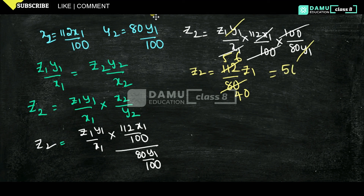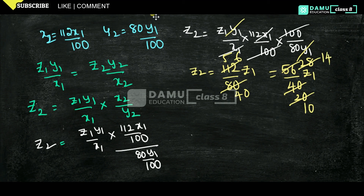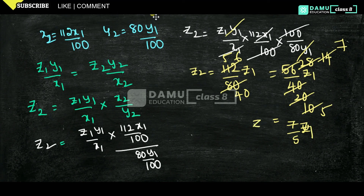Simplifying 112/80: dividing both by 8 gives 14/10, then by 2 gives 7/5. So z2 equals (7/5) times z1, which equals 1.4·z1.